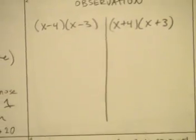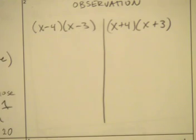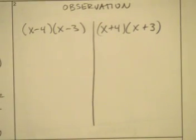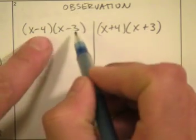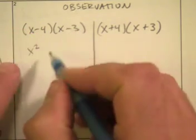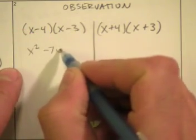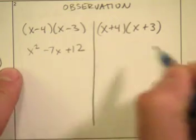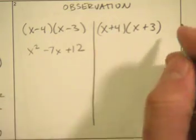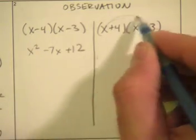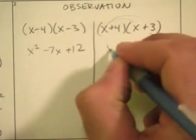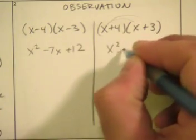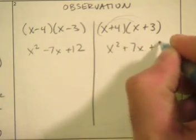We're going to make some observations. Let's do our FOILing here — we can mentally distribute. We know our first term is x squared, the middle term is negative 7x, and the last term is plus 12. Over here, when I do my distribution, I get x squared plus 3x plus 4x plus 12, which gives x squared plus 7x plus 12.